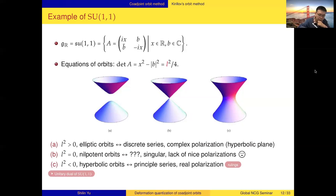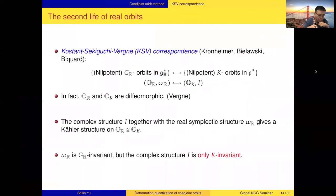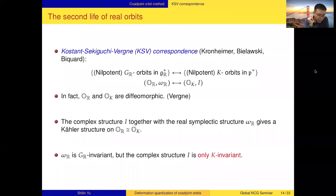So we have to adjust the original orbit conjecture a little bit and ask for something less. The main issue with nilpotent orbits is that we don't have a nice geometric structure on those orbits. But on the other hand, there's a mysterious correspondence lying in the background — the Kostant-Sekiguchi-Vergne correspondence.